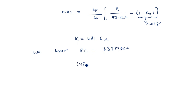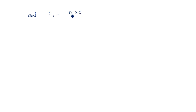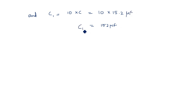Since RC equals 7.33 milliseconds and R is now known as 481.6 ohms, we can find C: 481.6 × C = 7.33 × 10⁻³, giving C equal to 15.2 microfarads. This is the value of the capacitor through which we take the output. C1 is taken as 10 times C, so C1 = 10 × 15.2 = 152 microfarads.